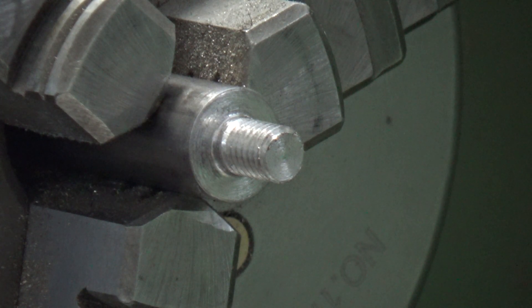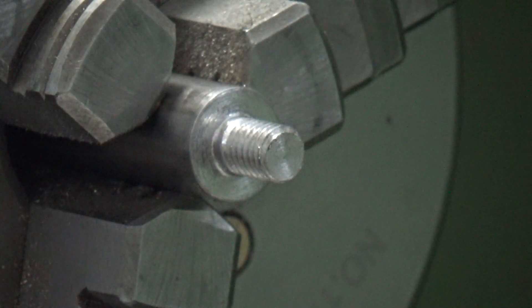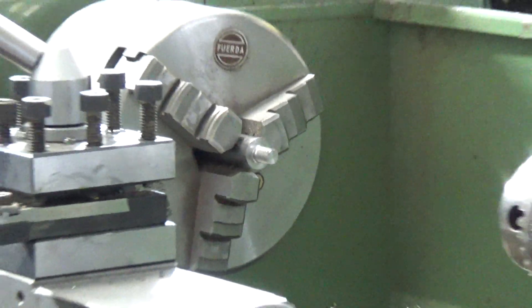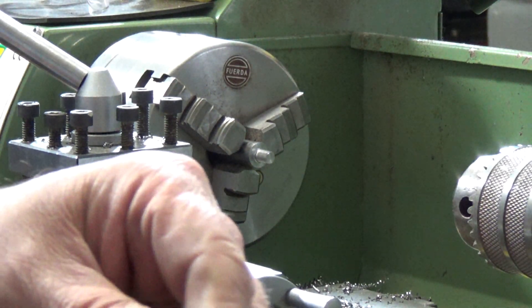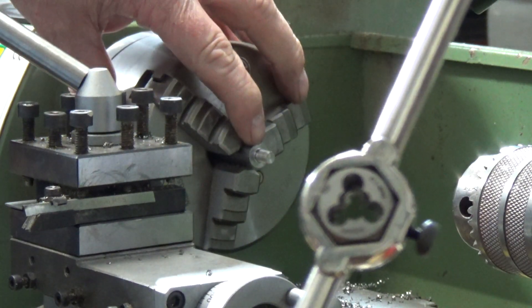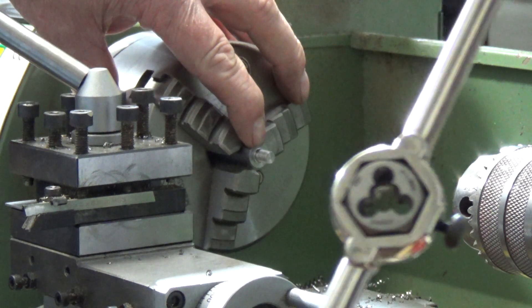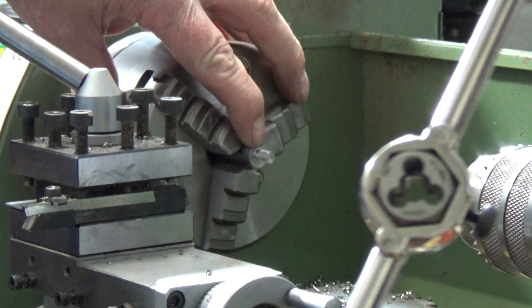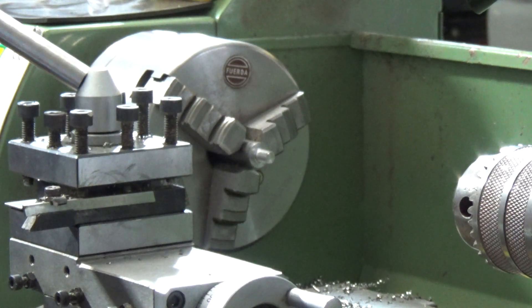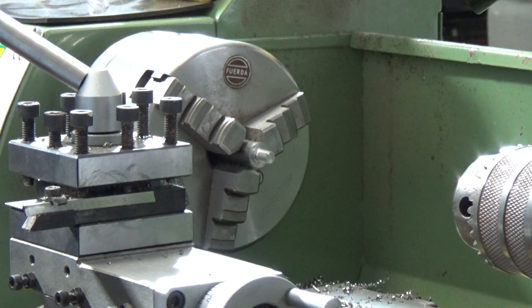What I am going to do is, these dies have quite a long leading on them so it means that they won't cut right up to the shoulder on the bar. So I'm going to take the die out, reverse it and then run it back up so it'll cut the thread pretty close, finish the thread off pretty close to the shoulder. And that's it, that's the thread on the end that goes into the turret done.